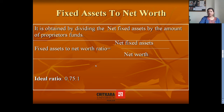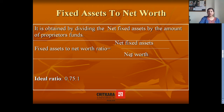The next solvency ratio is fixed assets to net worth ratio. As the name suggests, it establishes the relationship between fixed assets and net worth. Net fixed assets are calculated by subtracting depreciation from total fixed assets. Net worth is calculated in the same manner as shareholder funds, as discussed previously. The ideal fixed assets to net worth ratio is 0.75:1.